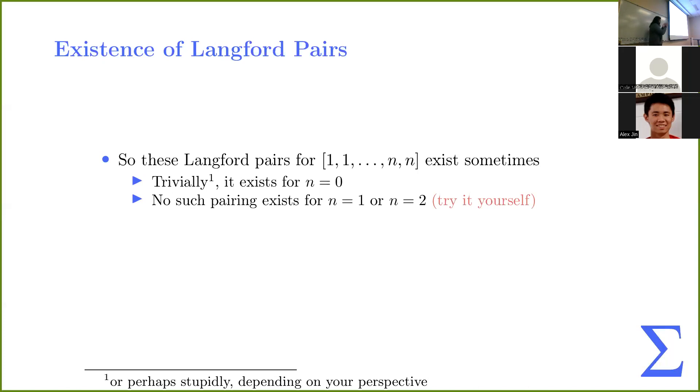So for n is equal to one, we just have two ones. Those are the only numbers we have. So there isn't a third number we can place in between the two ones. So no pairing exists for n is equal to one. Now, for n is equal to two, so we have four slots, and in the four slots, we have to place the two twos. And the only way to place them, such that there's two spots in between, are on the ends. So on the leftmost end and on the rightmost end of the list. And then that means you have to put the two ones in the middle. And we run into the same issue. There isn't another number in between the two ones. So there's no pairing for n is equal to one or two.